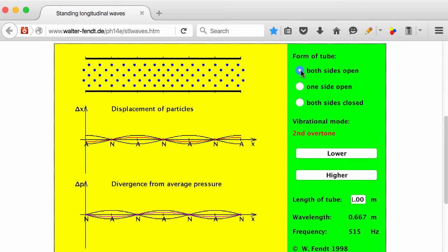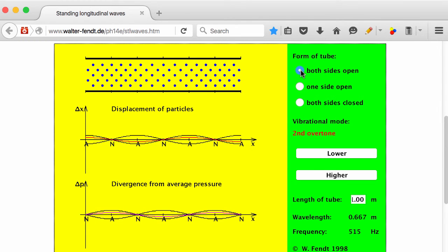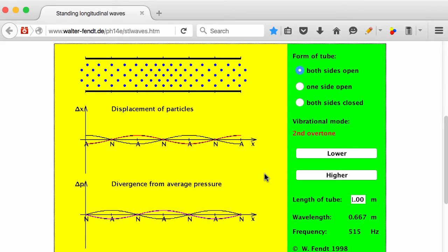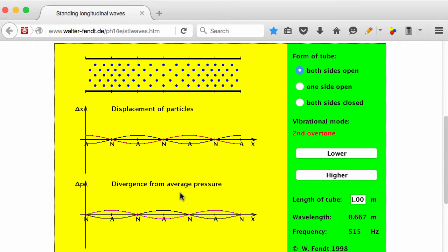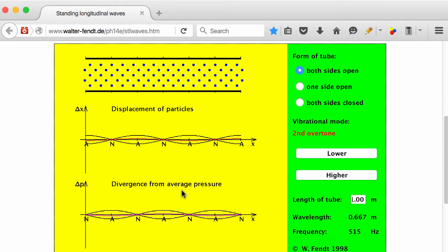Down here what we're looking at are graphs of what's happening. We have a displacement versus position in the tube graph. We also have a divergence from average pressure, a pressure versus position graph.